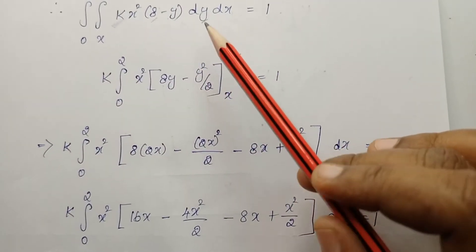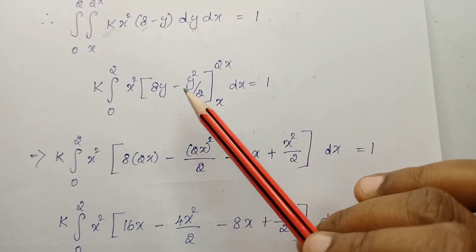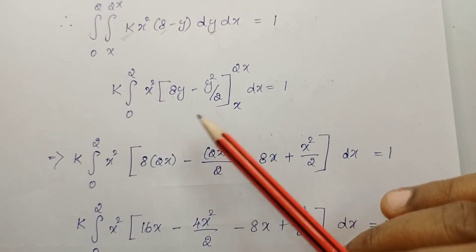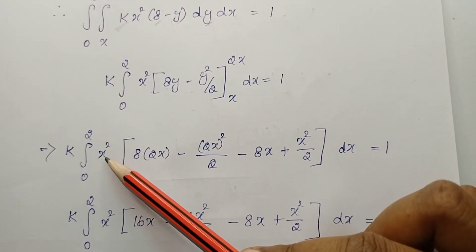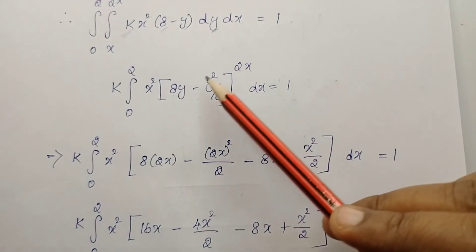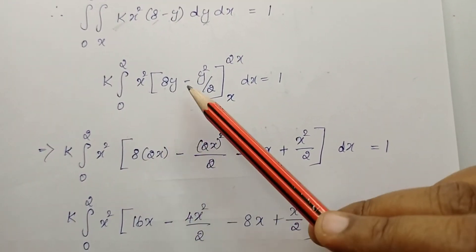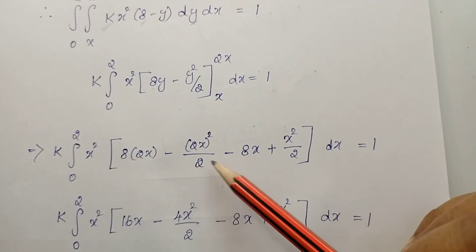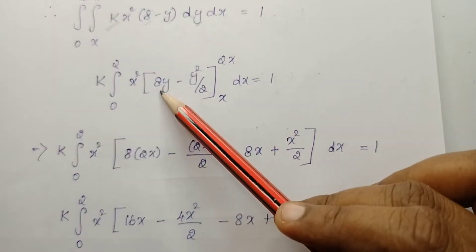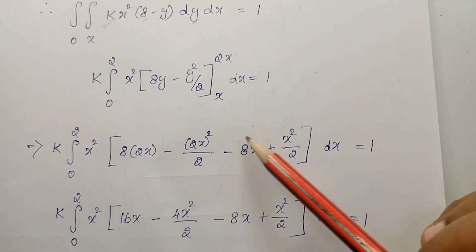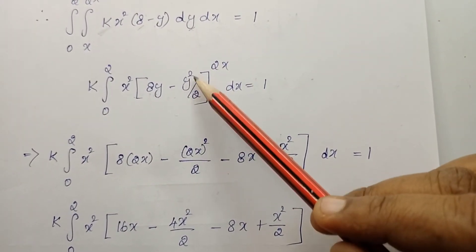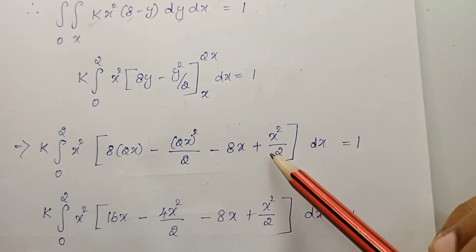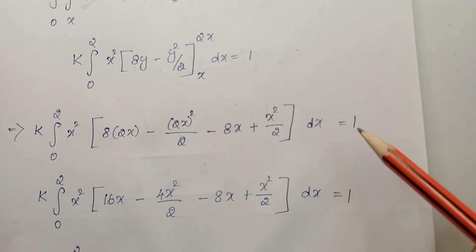Now integrate with respect to y by substituting the upper and lower limits. We get k times the integral from 0 to 2 of x squared times: substitute upper limit — (8 times 2x minus (2x)² divided by 2) — minus substitute lower limit — (8x minus x² divided by 2). This gives the expression inside dx, equal to 1.